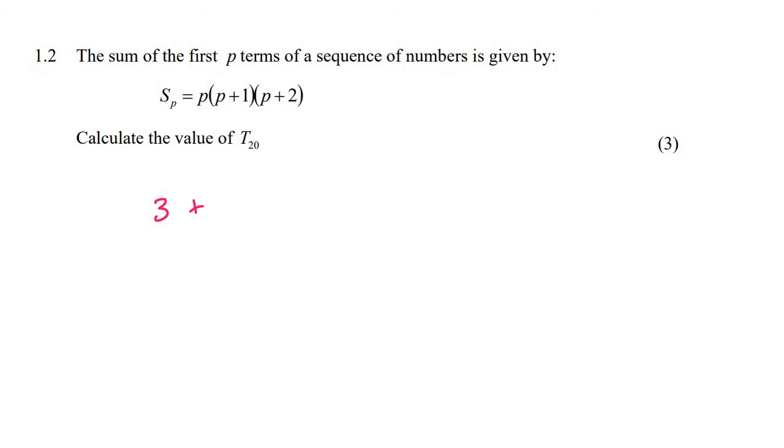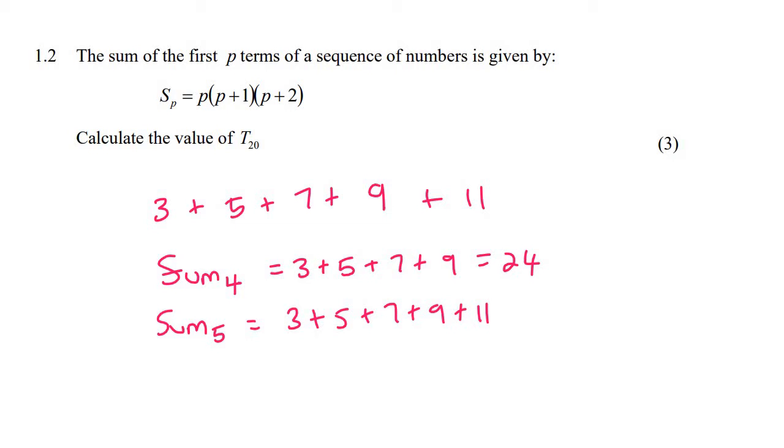Let's say I've got the sequence 3 plus 5 plus 7 plus 9 plus 11 for example. If I work out the sum of four terms, that's going to be 3 plus 5 plus 7 plus 9 which is 24. If I work out the sum of five terms, that'll be 3 plus 5 plus 7 plus 9 plus 11 and that's going to give me 35.